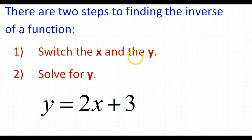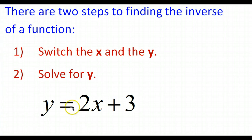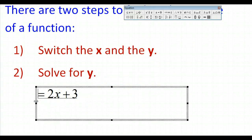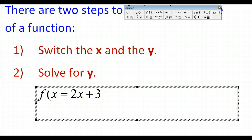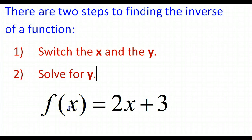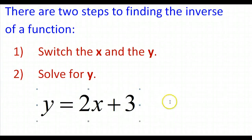When I talk about switching the x and the y and solving for y, I'm picturing an equation — a function written in this form, like y equals 2x plus 3. But very often, a function will be written in function notation. So instead of y equals 2x plus 3, you'll see f of x equals 2x plus 3. Just understand, f of x, or g of x, or h of x — this is the same thing as y. So you can just replace that with y and then follow the instructions I'm about to show you.